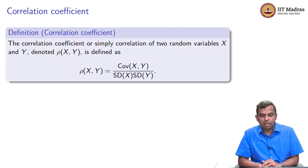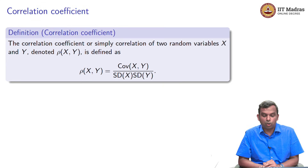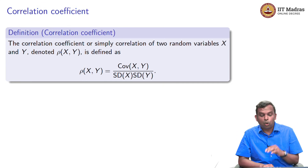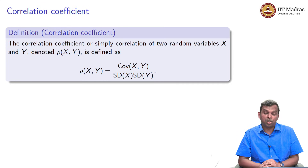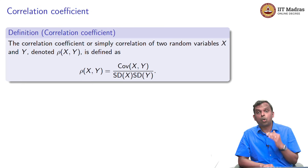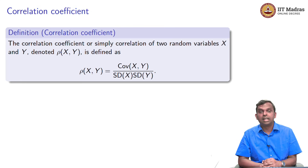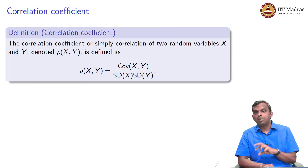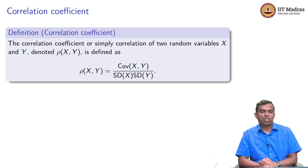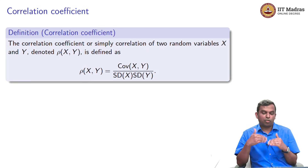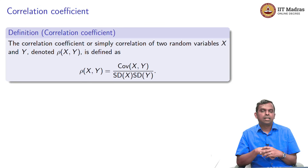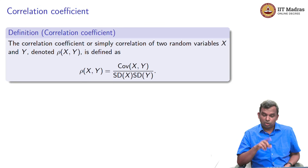This is the definition of the correlation coefficient, or simply correlation. We use the notation rho of xy for it. It is the covariance of xy divided by the standard deviation of x times the standard deviation of y. So we normalize it. We will see why this is a very meaningful normalization soon enough.